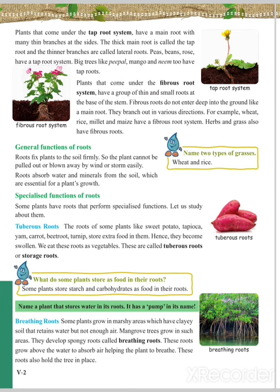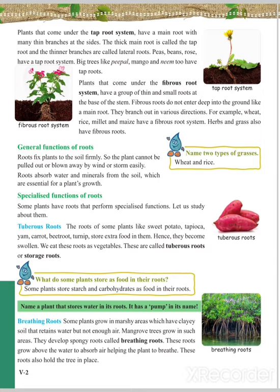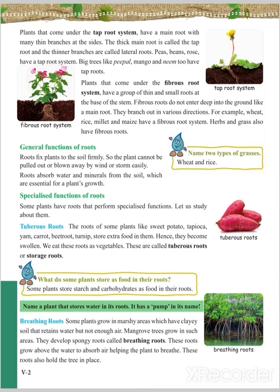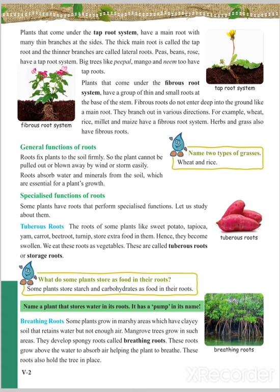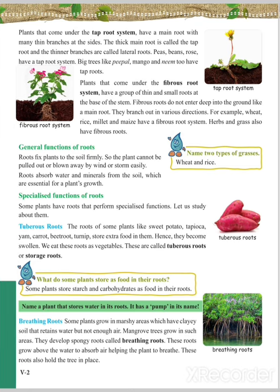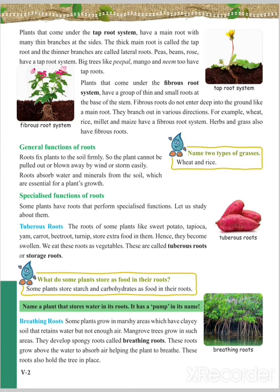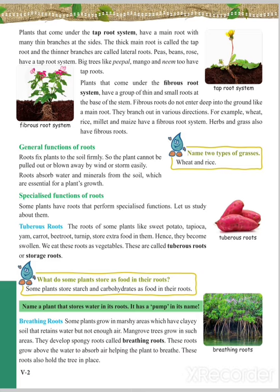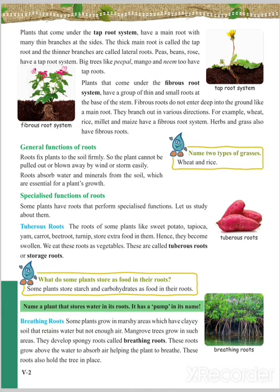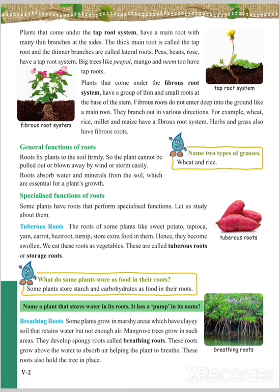The next type is breathing roots. In marshy areas — areas where heavy rain causes continuous water to stay on the surface — plants cannot breathe easily as they do not get enough air. Mangrove trees grow in such areas and develop spongy roots called breathing roots. These roots grow above the water to absorb air, helping the plant breathe, and also help hold the tree in place.